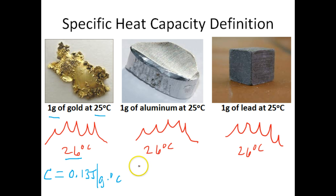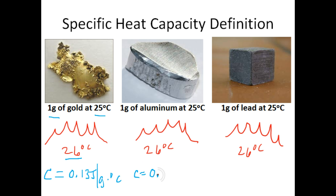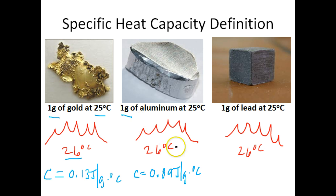Let's look at the aluminum. We want to heat one gram of aluminum up one degree Celsius. So basically what we're asking is, what is the specific heat capacity of aluminum? The specific heat capacity of aluminum, if we turn to a table, is 0.89 joules per gram degree Celsius. This means if you've got one gram of aluminum and you want to raise its temperature one degree Celsius, then this aluminum will need to absorb 0.89 joules of thermal energy in order to do so.